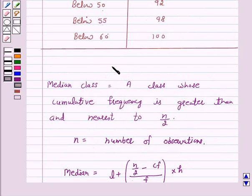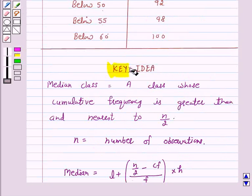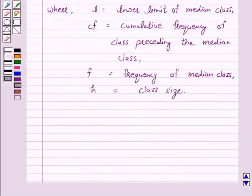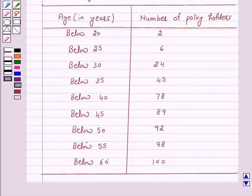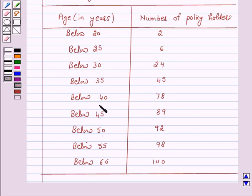So this is the key idea behind our question. We will take the help of this key idea to solve the above question. To calculate the median age, we need to find the class intervals and their corresponding frequencies. The given distribution is a cumulative frequency distribution of less than type.